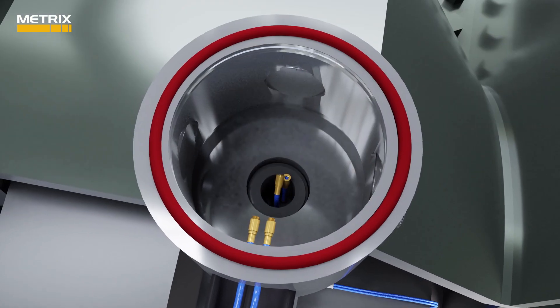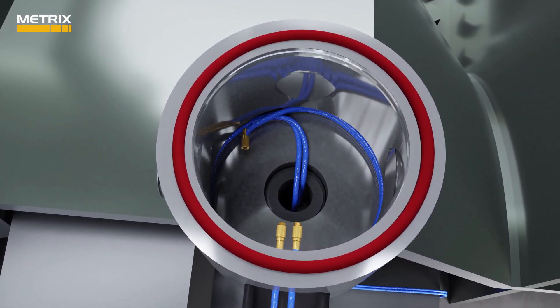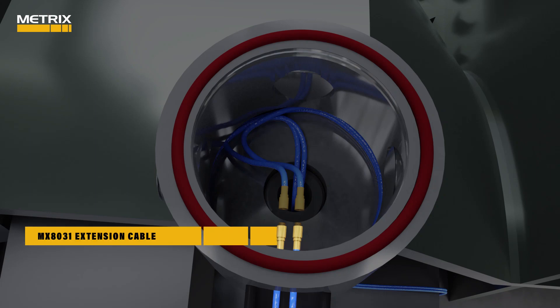Within the 5498 JB junction box, the probe cable is easily wound and connected to the MX8031 extension cable.